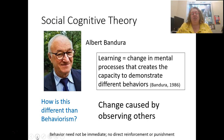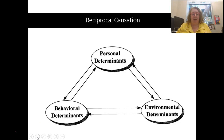The change in behavior doesn't have to be immediate — that change could happen over time or be delayed, and there doesn't have to be direct reinforcement or punishment of the behaviors in this model. It's really based upon this idea of reciprocal causation. This diagram is one of those things you should really think about when you think about social cognitive theory.